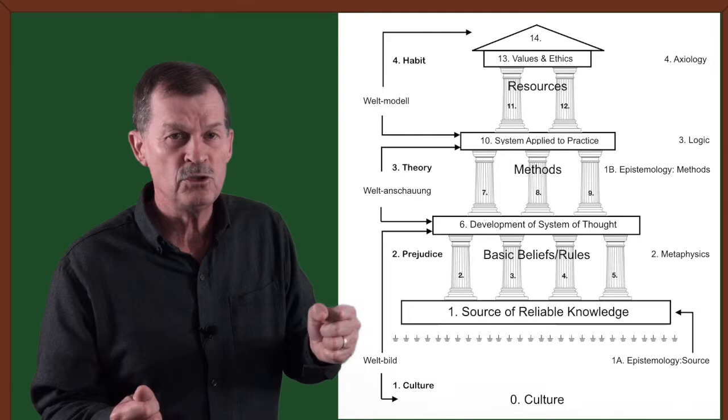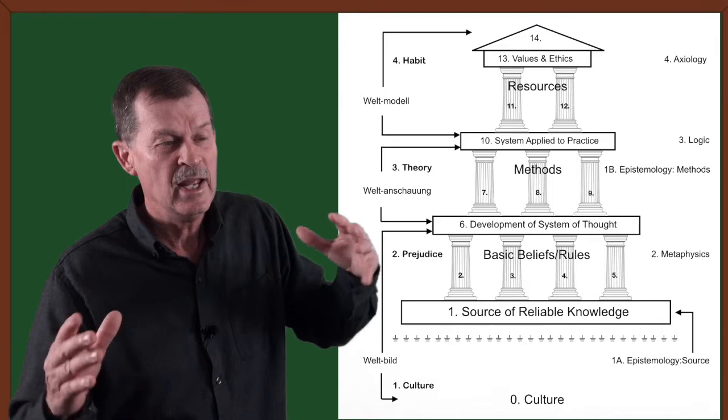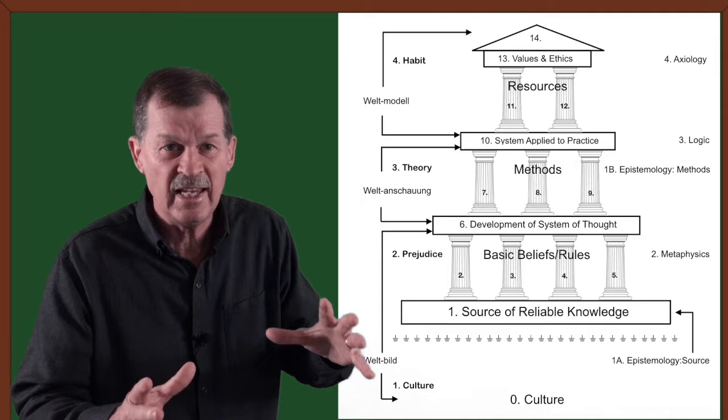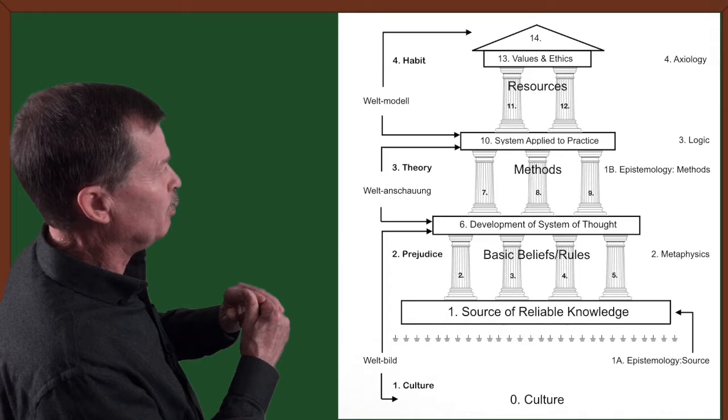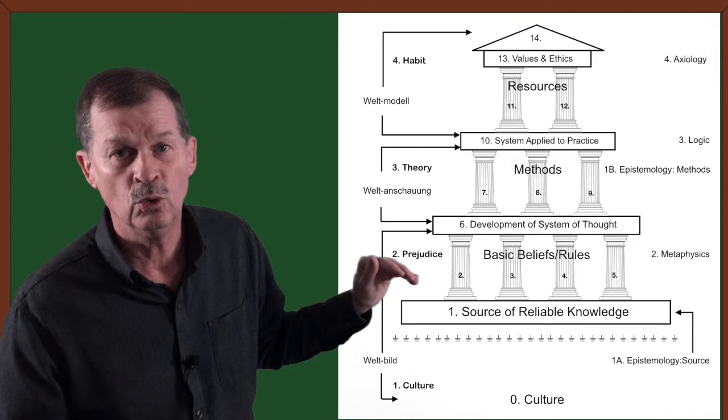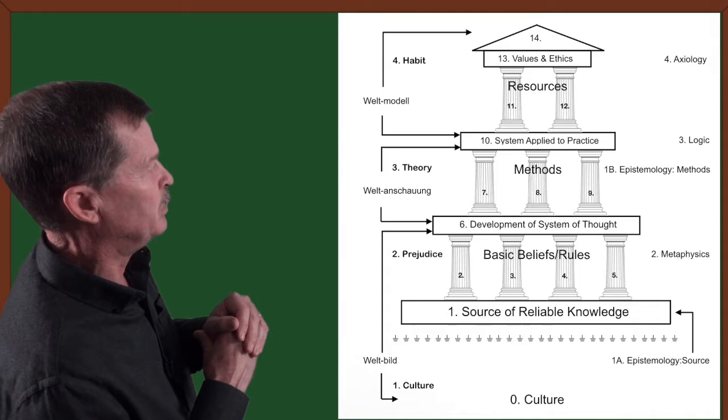That is the Weltbild part of the concept. And that Weltbild includes culture, which would be the factor that Stephen Jay Gould is mentioning that influences. That's why you see culture number one listed right next to Weltbild.